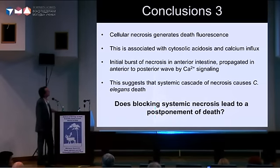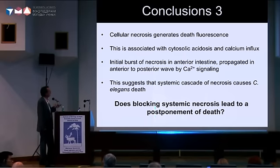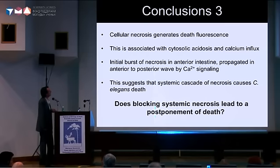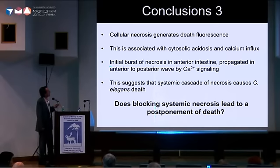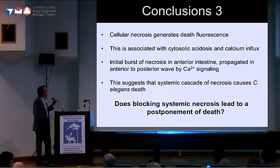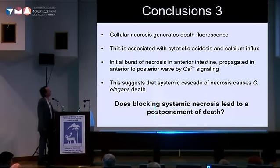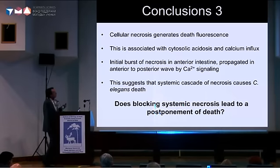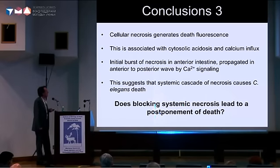To sum up: this data implies that cellular necrosis is generating death fluorescence, and that this is associated with a cytosolic acidosis and calcium influx. It seems as if you have an initial burst of necrosis in the anterior intestine, propagated in an anterior-to-posterior wave by calcium signaling. This suggests that what we have is a mechanism of organismal death in C. elegans which is a systemic cascade of necrosis. This is work that's ongoing and unpublished.